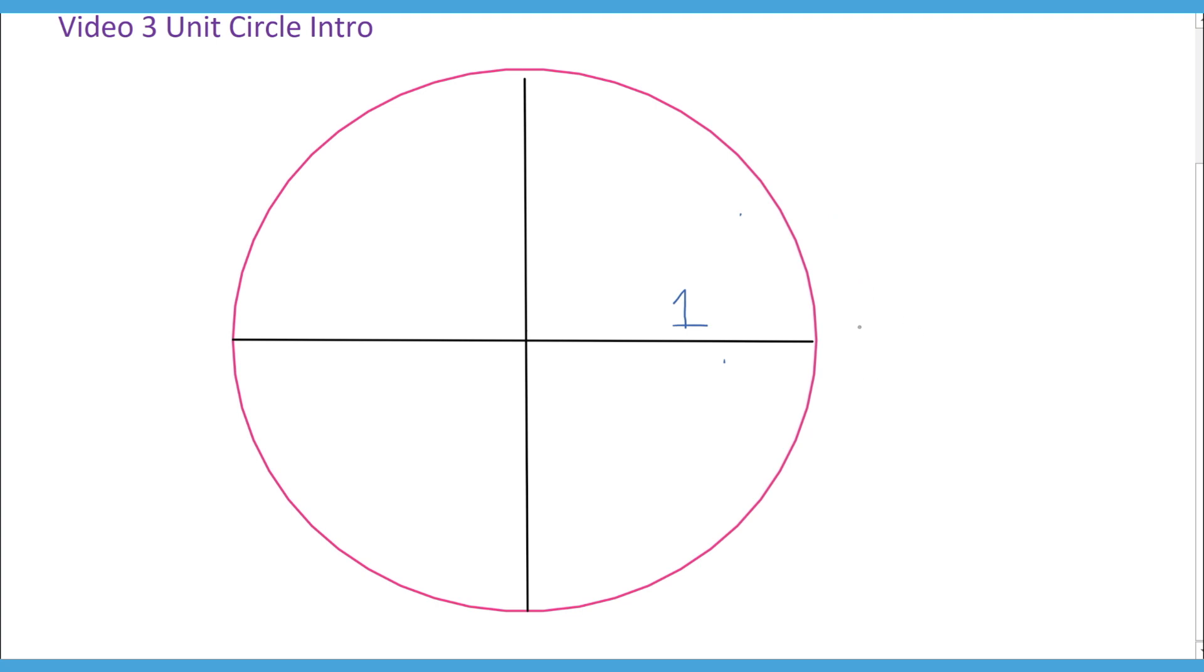So if we start here, this is considered 0 degrees. And if you go up here at the top, that makes a right triangle, so that would be 90 degrees. If you go another 90 degrees, that would be 180, and that makes sense because that's a straight line and the angle of a straight line is 180.